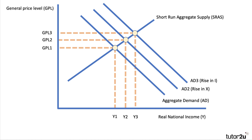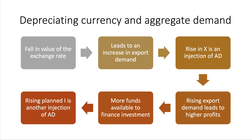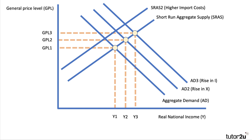All things being equal, a fall in the pound could be good news for GDP, although potentially with some inflationary pressure depending on the elasticity of the supply curve. A fall in the value of the pound should increase export demand — a rise in exports is an injection into the circular flow — rising export demand leads to higher profits, potentially funding more investment. But we also know import prices will rise, so short-run aggregate supply may shift to SRAS2. The net effect could be quite a significant rise in inflation.